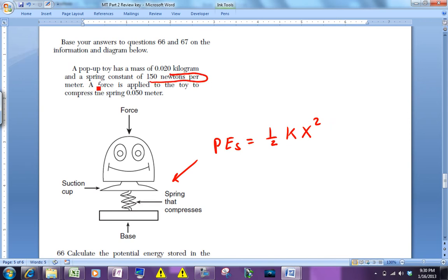This 150 newtons per meter is the value of k. k is the spring constant. It's basically a measure of how strong the spring is. How many newtons you would have to apply to it to make it stretch one meter from its rest position.